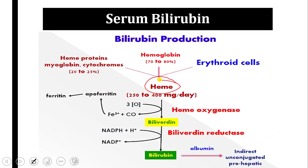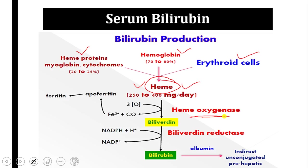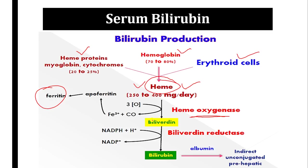Bilirubin is the end product of heme catabolism. Heme comes from various heme proteins — primarily hemoglobin from erythroid cells — contributing 250 to 400 mg per day (average 300 mg/day) to the heme pool. Heme oxygenase converts heme into biliverdin, a green pigment, releasing iron as ferritin. Biliverdin is then converted to bilirubin — a yellow pigment — by biliverdin reductase using NADPH. Bilirubin is synthesized in the reticuloendothelial system.